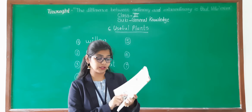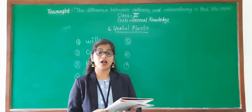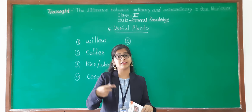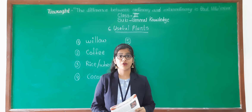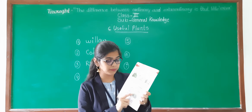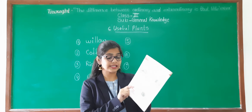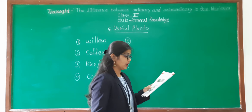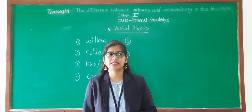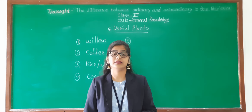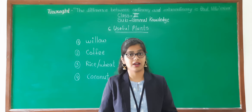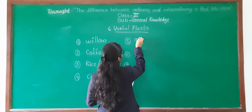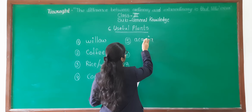Next is the fifth one. Read that sentence: you get gum from me. That sticky gum that we are using for making many things — from which plant can we get that gum? See the help box. It is acacia. In Marathi, we can call it babul, and in English, we say acacia. Write down the name of the fifth one: acacia.